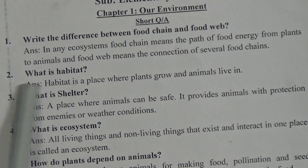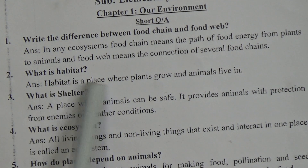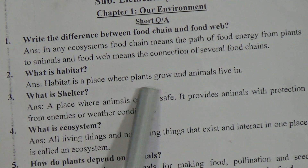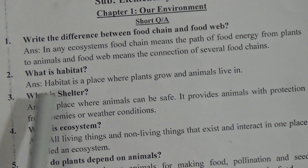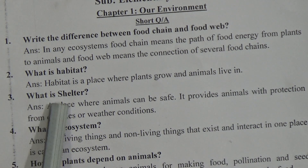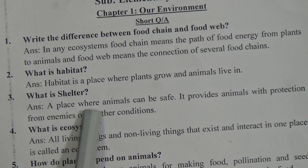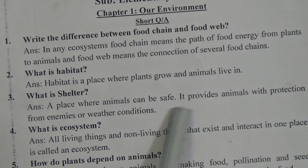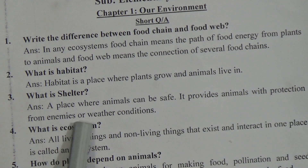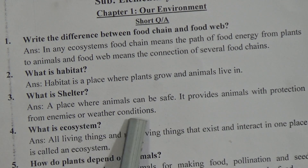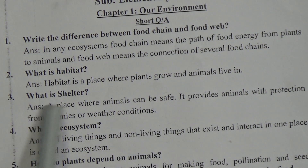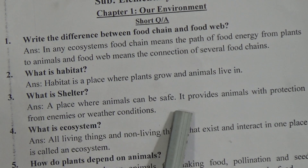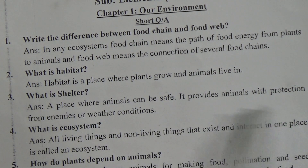Short question number 2: What is habitat? Habitat is a place where plants grow and animals live in. Short question number 3: What is shelter? Shelter is a place where animals can be safe. It provides animals with protection from enemies and adverse weather conditions.